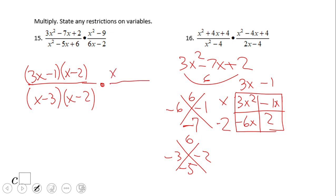And let's take a look at the second rational expression. x squared minus 9, difference of squares. x minus 3, x plus 3. And what about 6x minus 2? We can factor out the 2, and we have here 3x minus 1.